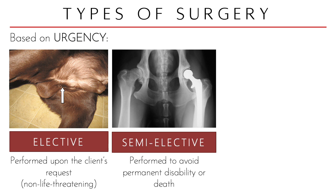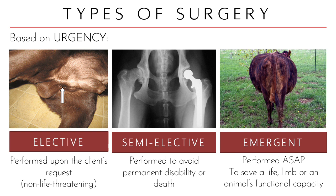Emergent procedures are those that need to be performed ASAP. You need to save a life, a limb, or an animal's functional capacity. Cattle are very prone to bloat, as seen in this image, so you need to correct that through a certain kind of surgery to save the life of an animal — you could save a limb or the functional capacity of a certain body part.